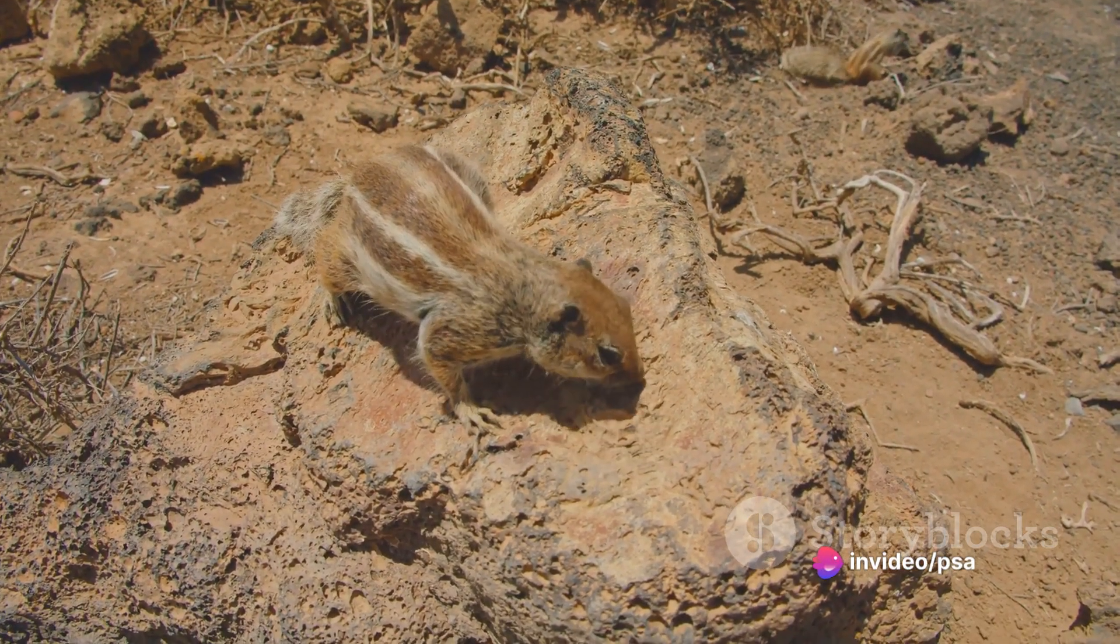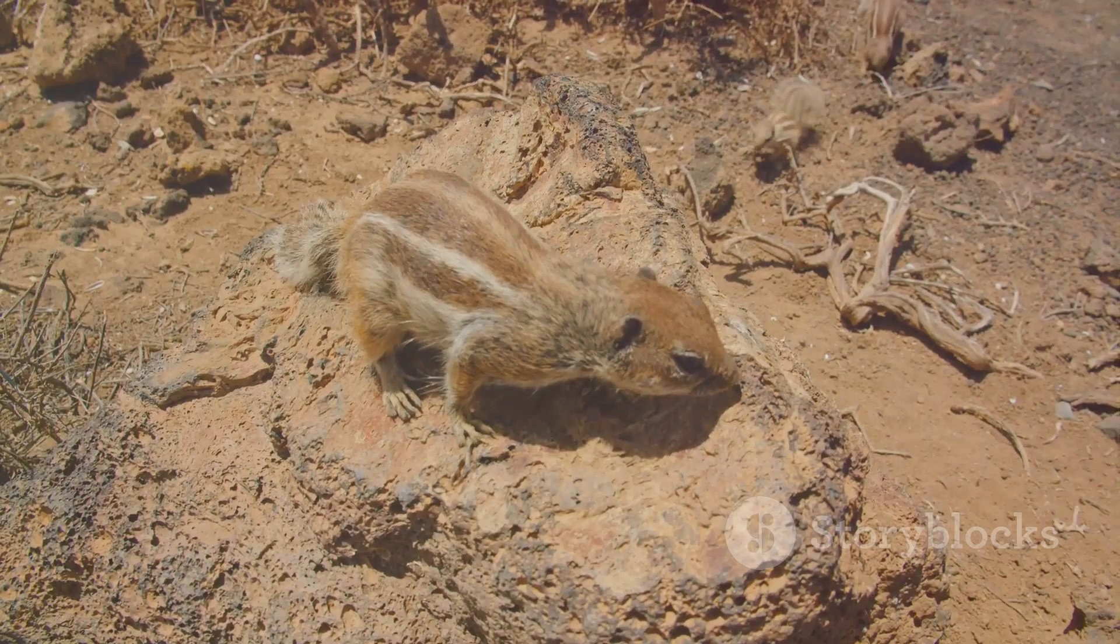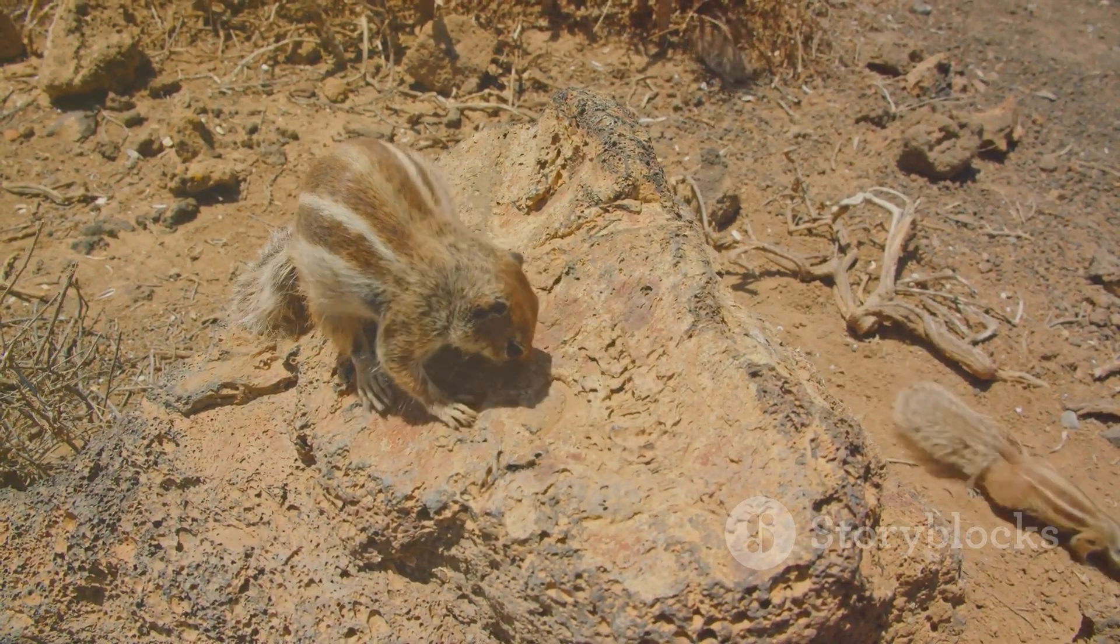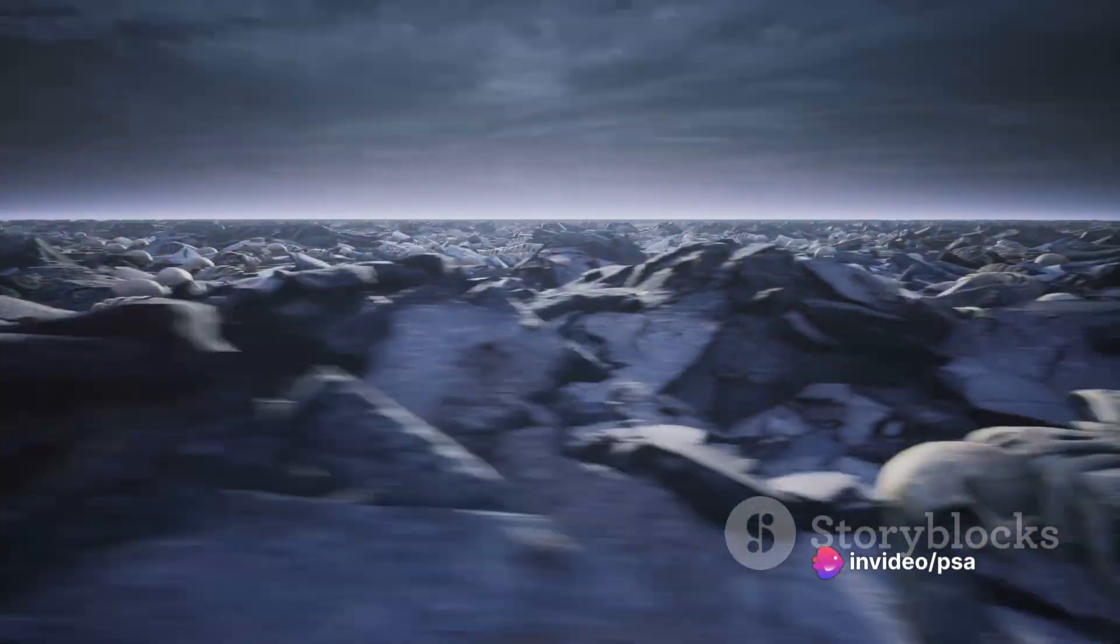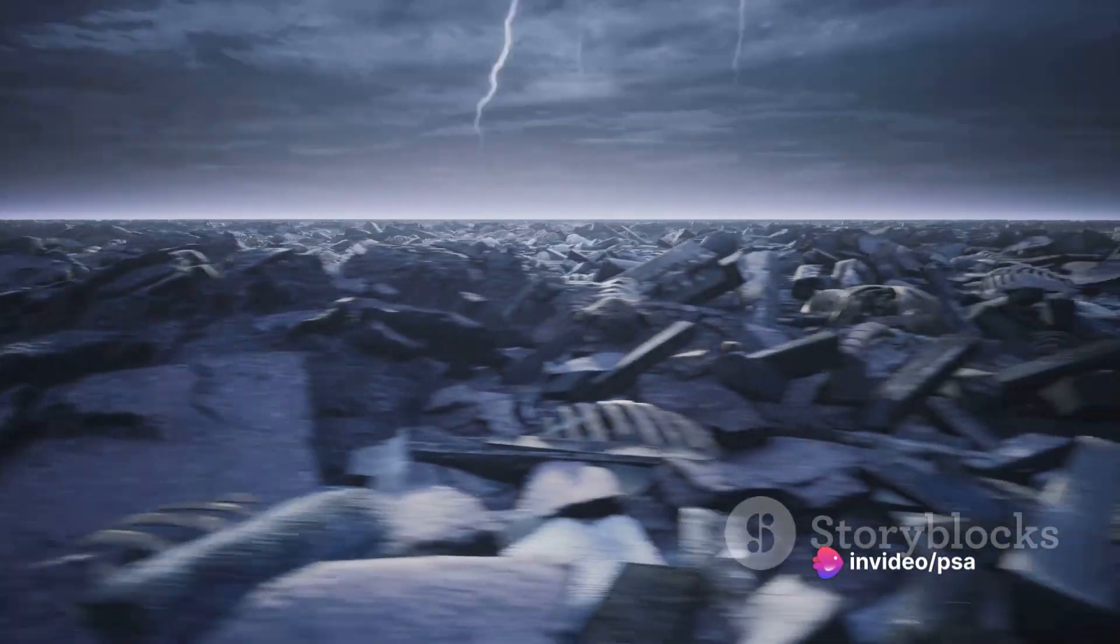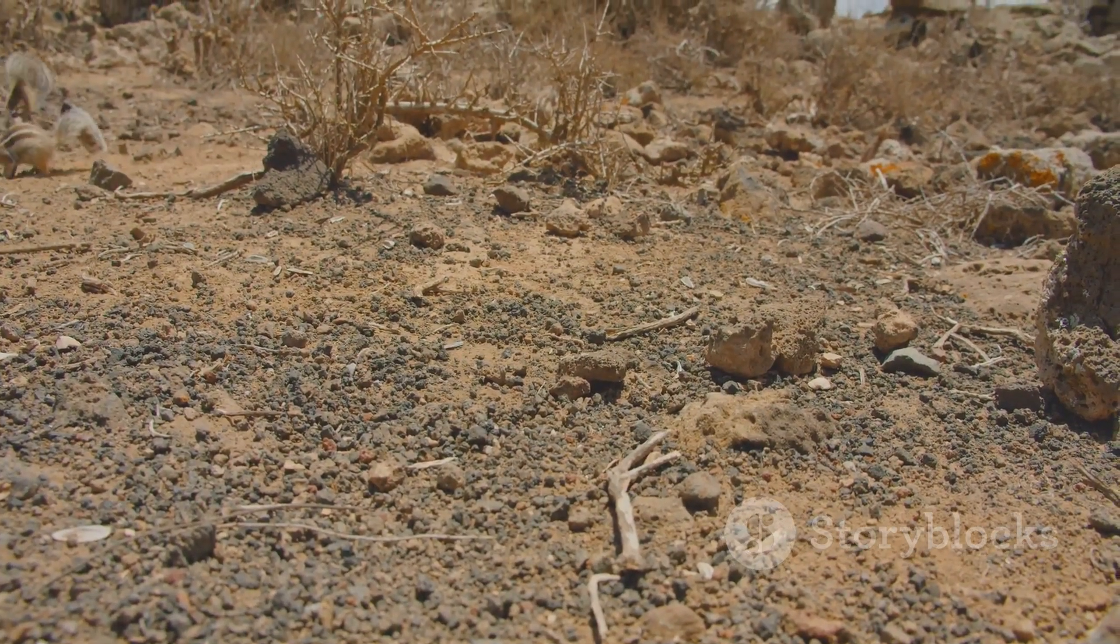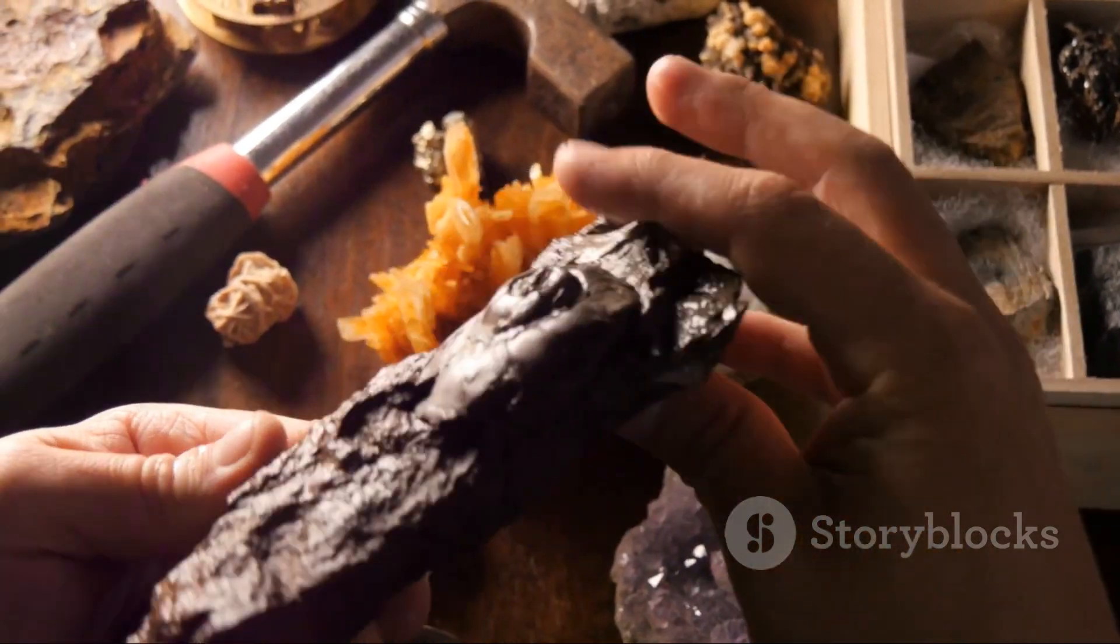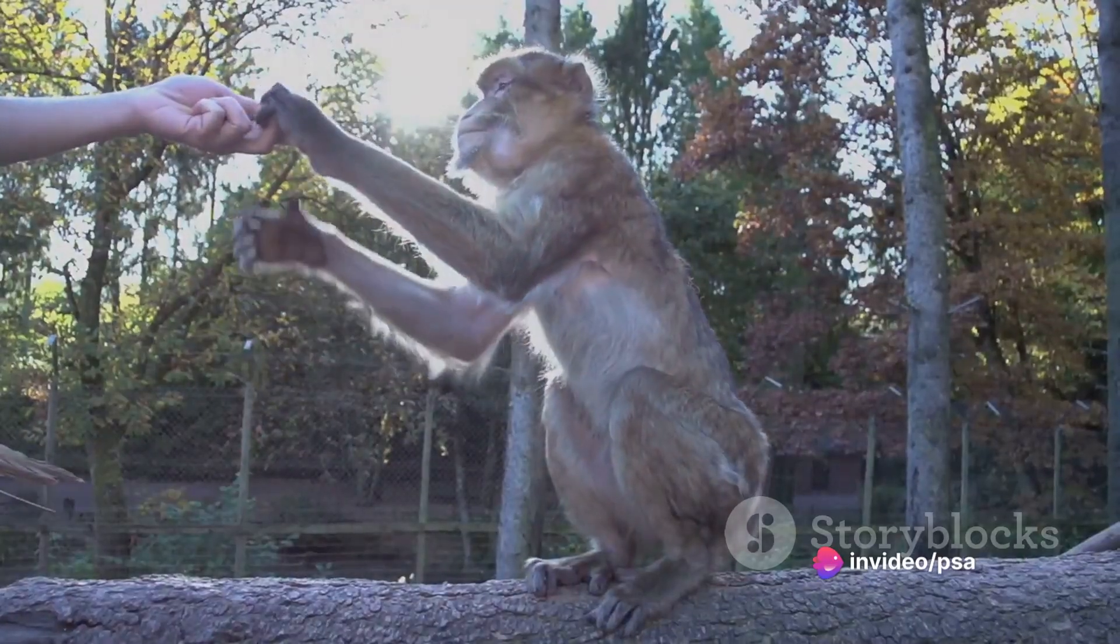They could burrow into the ground for warmth or scramble into the safety of a thicket at the first sign of danger. The extinction of the dinosaurs had vacated numerous ecological niches—roles or jobs within an ecosystem like being a predator, a scavenger, or a herbivore. The small mammals, once limited to a nocturnal existence, saw this as a golden opportunity. They began to diversify, evolving into a myriad of forms to fill these vacant roles.